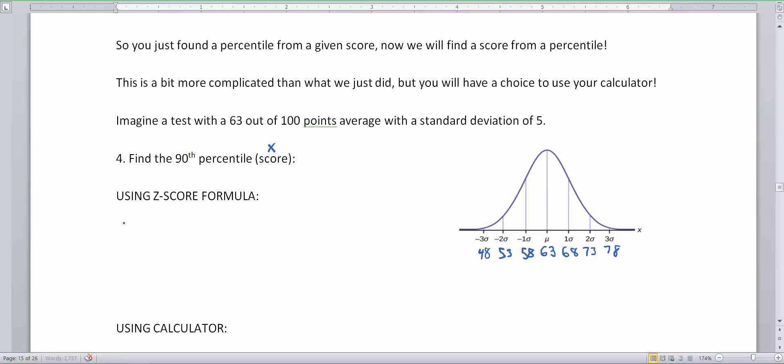So we're going to first use our z-score formula which will make us use our chart, and then I'm going to show you how to do it on the calculator. So we are going to write our z-score formula. Z equals x minus mu divided by the standard deviation.